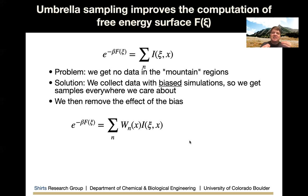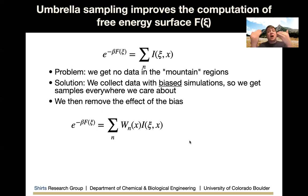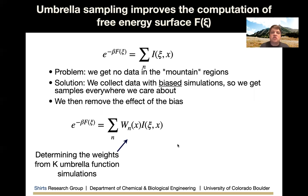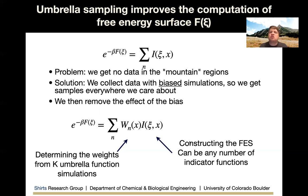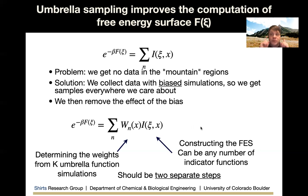Instead of our probability as a function of collective variable being a sum of indicator functions, it's a weighted sum. If we had to force the simulation to visit a region, we assign it a low weight; if it goes there naturally without any bias, it has a high weight. There are two steps to this process: we need to determine the weights from the K umbrella simulations, and then construct the free energy surface — figure out the weight of each sample and how those weighted samples contribute to the free energy surface. These should be two separate steps.